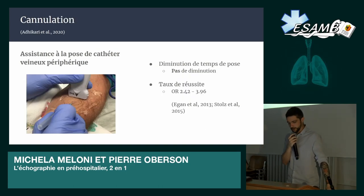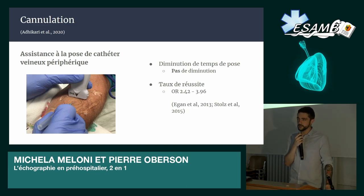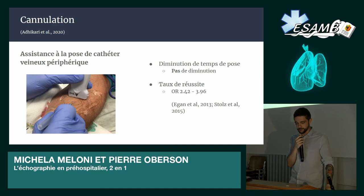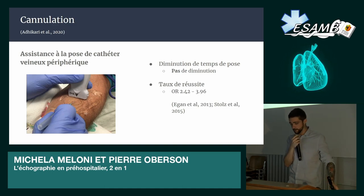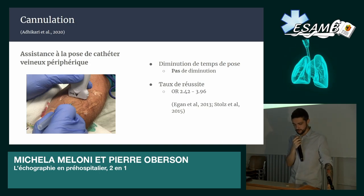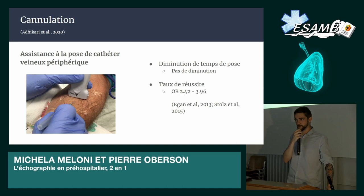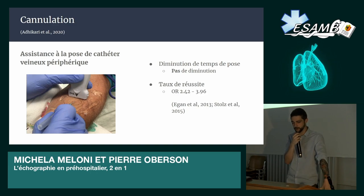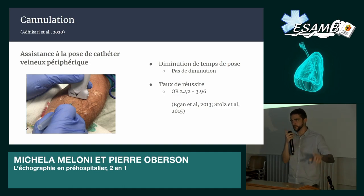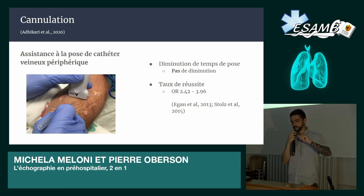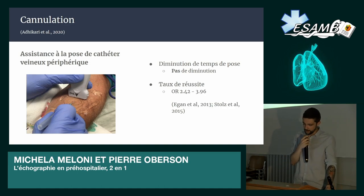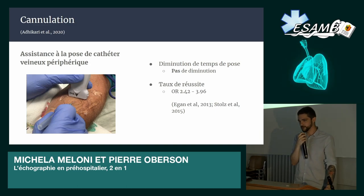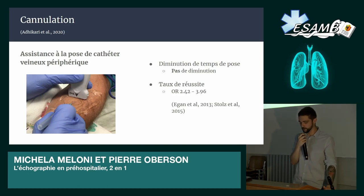Pour presque terminer, on va parler d'un geste technique assisté par l'ultrason : la pose de cathéter veinopériphérique. On sait qu'en préhospitalier, on est dans des conditions non optimales pour poser des CVP, d'autant plus avec des patients gravement malades. Souvent on peut poser une intra-osseuse, mais chez un patient conscient, c'est clairement pas optimal — ça reste quelque chose de très invasif. Avoir un ultrason permettrait d'avoir un bridge entre une pose de CVP standard et une intra-osseuse. Ça ne diminue pas le temps de pose, mais ça permet de réussir au premier essai avec un ratio entre 2,42 et 3,96.